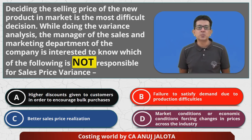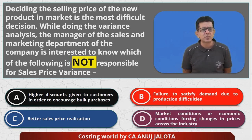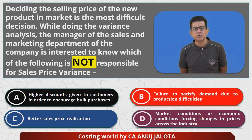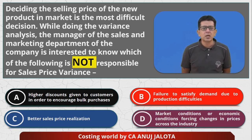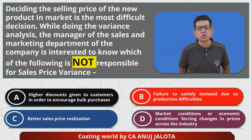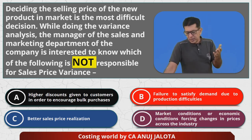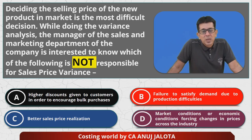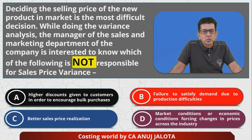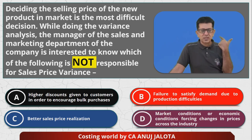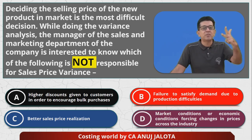Option C — Better sales price realization: you thought you'd sell at 10 rupees but sold at 13 — so that is a reason for sales price variance. Option D — Market or economic conditions forcing price changes across the industry. For example, during COVID many companies reduced prices because market conditions were bad, which would affect selling price variance. So A, C, and D all affect selling price variance.